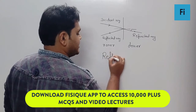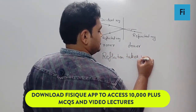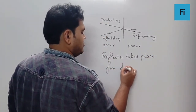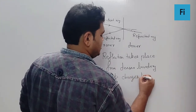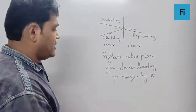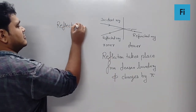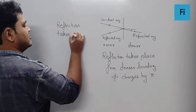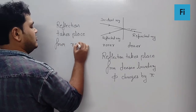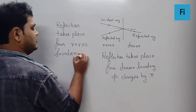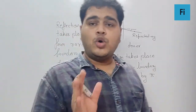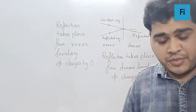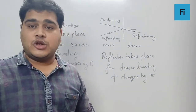When reflection takes place from a denser boundary, phase changes by pi. And if the reflection takes place from a rarer boundary, phase changes by zero, which means no change in phase. This condition applies to all kinds of waves — obviously mechanical as well as non-mechanical waves.